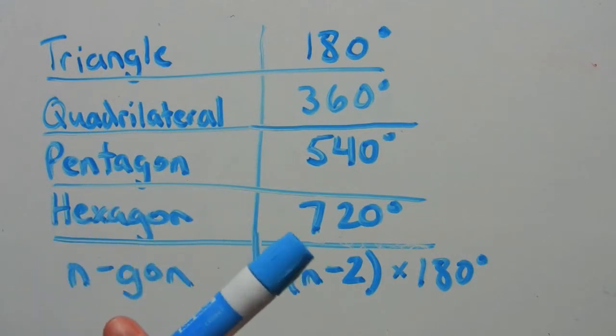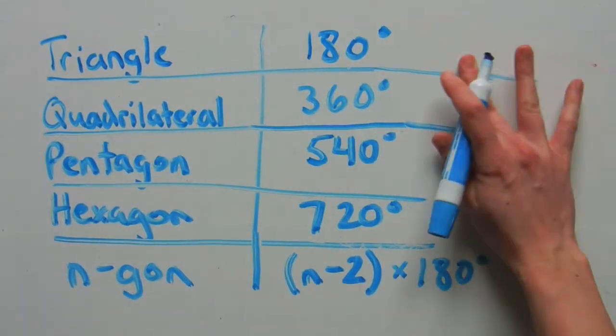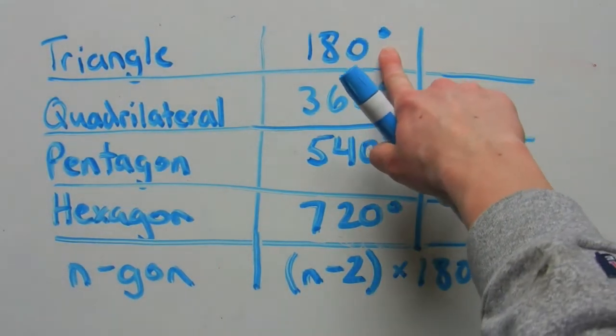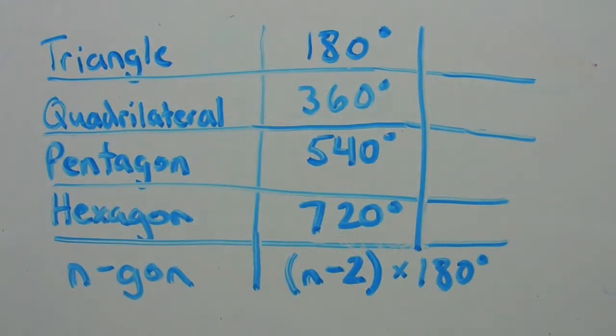If the polygon is regular, meaning that all the angles are congruent, then you just divide the sum of all the interior angles by the number of sides. So for a triangle, if it's a regular triangle, you just take 180 degrees and divide it by three. And that will give you 60 degrees.